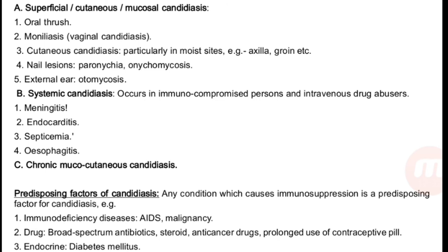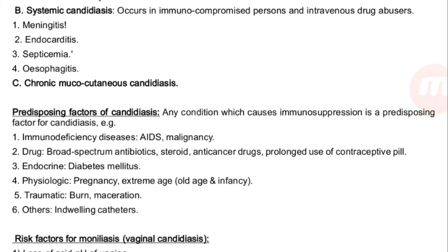Diseases produced by Candida albicans: superficial or mucosal candidiasis — oral thrush in the mouth; moniliasis or vaginal candidiasis with thick curd-like fluid; cutaneous candidiasis particularly in moist sites like axilla or groin; nail lesions — paronychia and onychomycosis; external ear — otomycosis. Systemic candidiasis occurs in immunocompromised persons and intravenous drug users, causing meningitis, endocarditis, septicemia, esophagitis, and chronic mucocutaneous candidiasis.